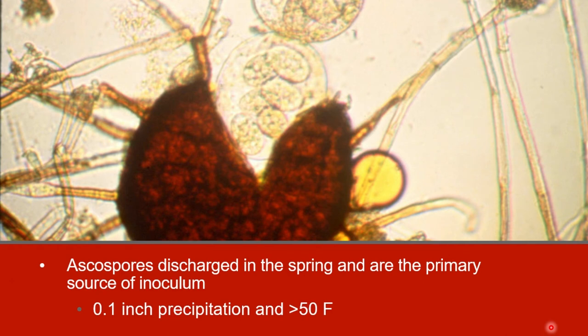Ascospores are carried by wind to susceptible tissues including leaves, flowers, berries, and stems. You can see here that the Kleistothesium has broken and this circular area is the asci, with the ascospores visible within the asci.